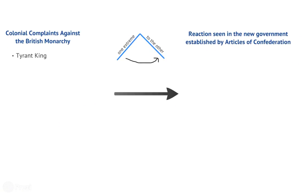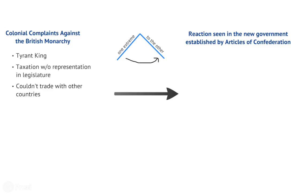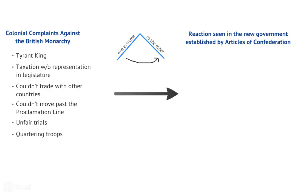We had a tyrant king — they listed these grievances in the Declaration of Independence. He taxed them without representing them in Parliament. He would not allow the colonies to trade with other countries. He told them they could not go west with the Proclamation Line, even though that land had been won in the French and Indian War. He refused to allow them to have fair trials, demanded judges find everyone guilty, and required people to be taken back to England for trial.